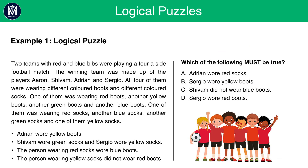Example 1. Two teams with red and blue bibs were playing in a four-a-side football match. The winning team was made up of the players Aaron, Shivam, Adrian, and Sergio. All four of them were wearing different coloured boots and different coloured socks. One was wearing red boots, another yellow boots, another green boots, and another blue boots. One was wearing red socks, another blue socks, another green socks, and one yellow socks.